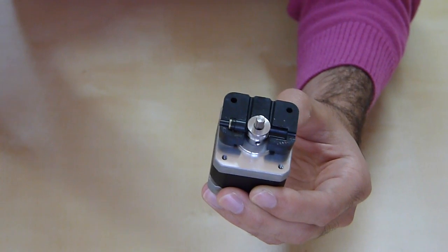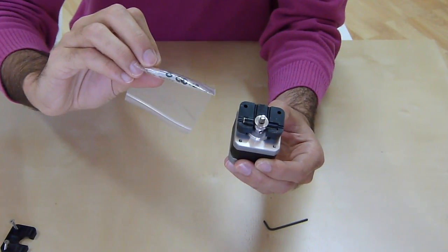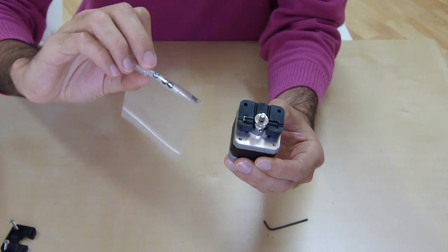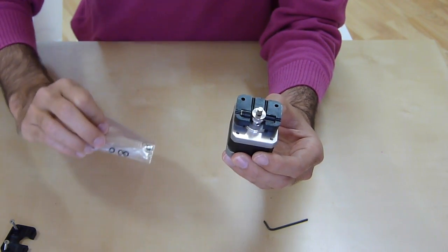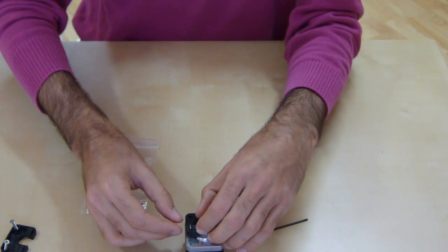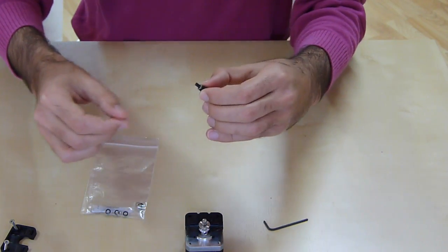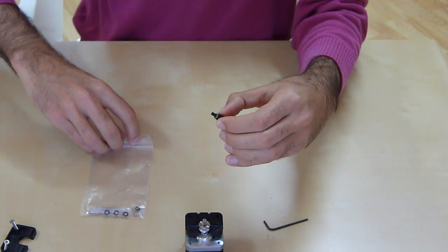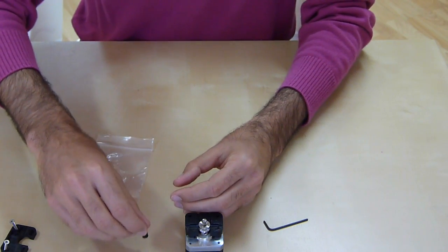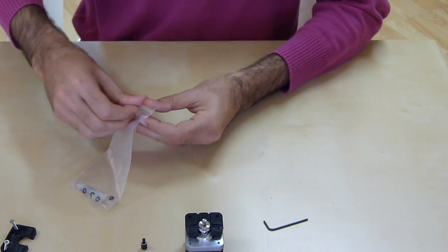With your replicator, you will have received a bag with a set of spare parts which includes additional washers. What you will need to do now is remove this plunger gently and then insert an additional washer into the plunger to make it stick closer to the drive gear.